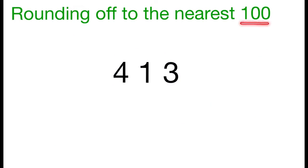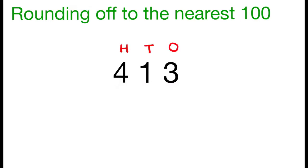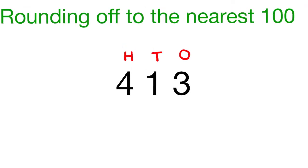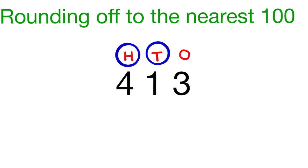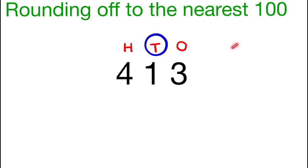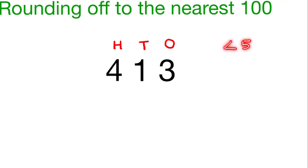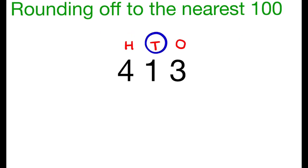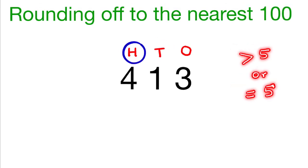Rounding off to the nearest hundreds. In the number 413, the digit 3 is in the ones place, 1 is in the tens place and 4 is in the hundreds place. When we round off a number to the nearest hundreds, the digit in the tens place and the digit in the hundreds place are taken into consideration. If the digit in the tens place is less than 5, there will be no change for the digit in the hundreds place. If the digit in the tens place is greater than 5 or equal to 5, then we add 1 to the digit in the hundreds place.